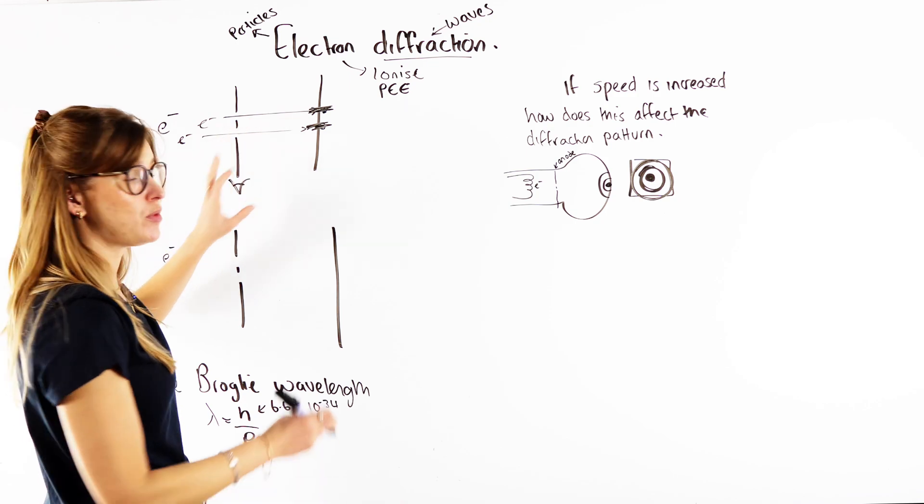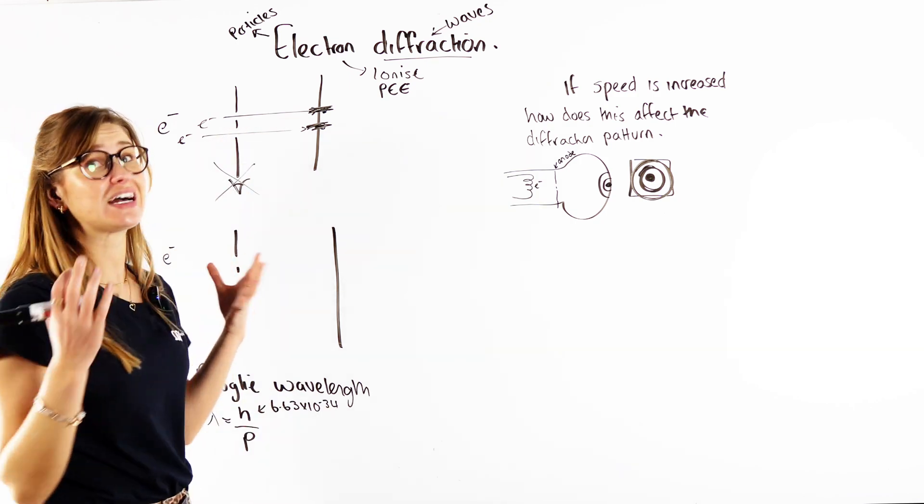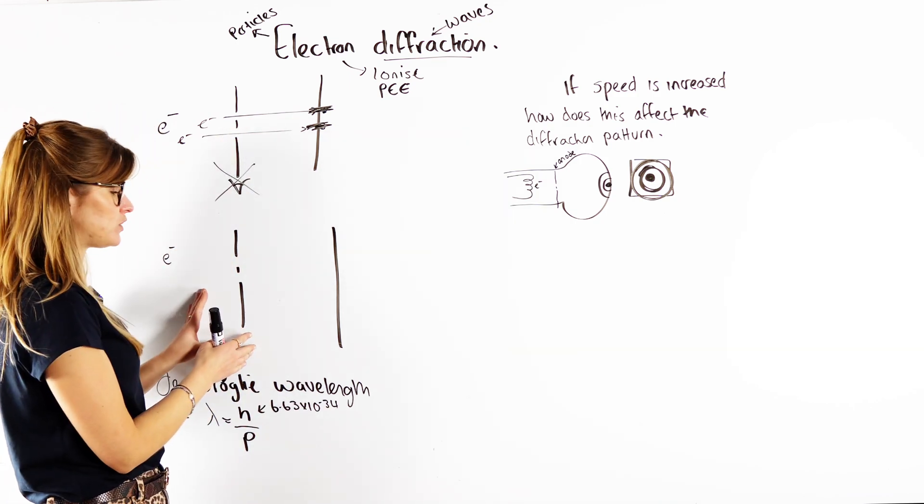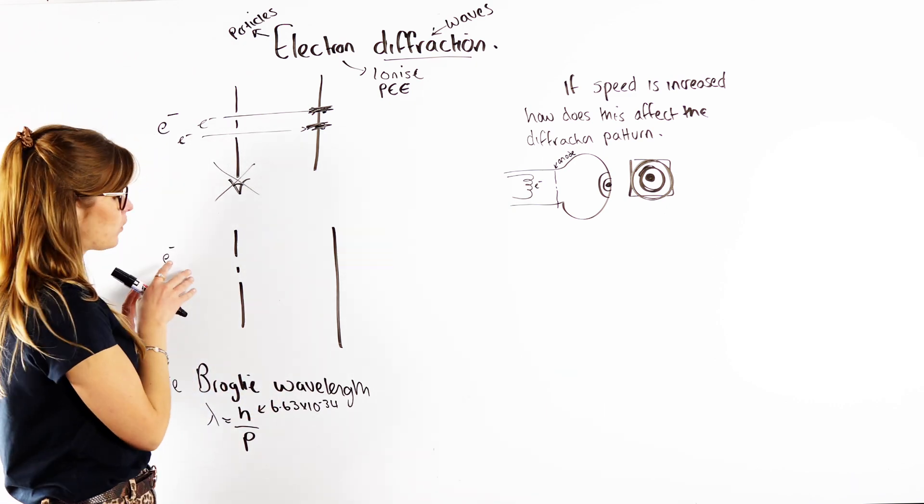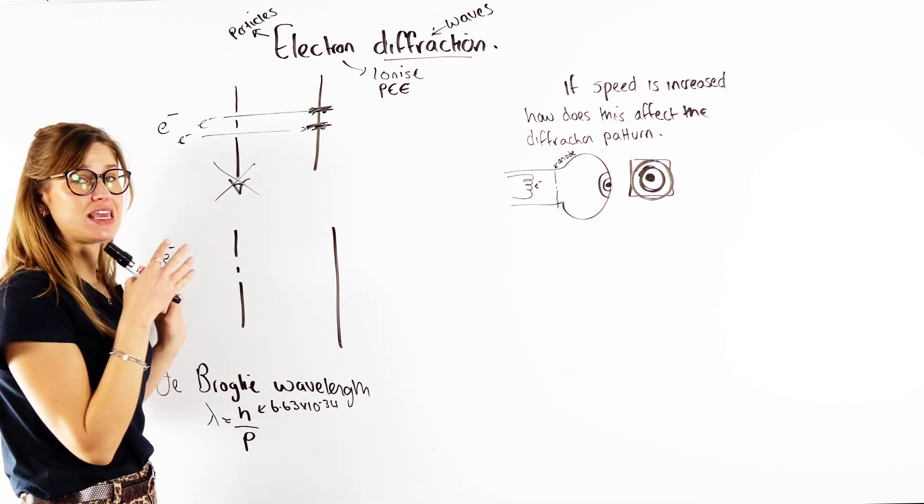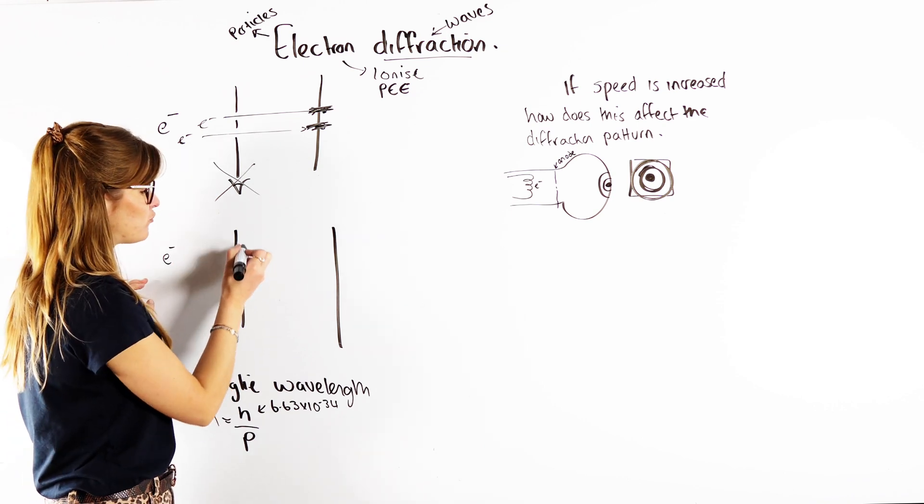However, if we're not in the room, not observing, and this is fascinating, if we're not in the room not observing, the electrons actually behave as waves. So what they do is, when they get to this double slit, they actually behave as waves, and we know they're going to diffract.